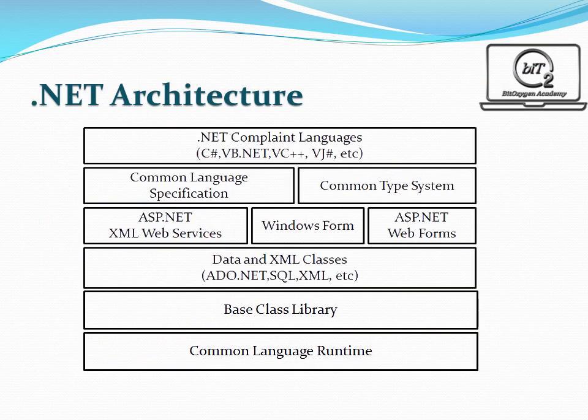This is .NET Architecture. .NET Architecture consists of six layers. Today we will discuss about important components of .NET Framework.